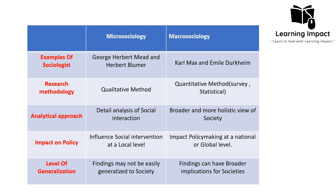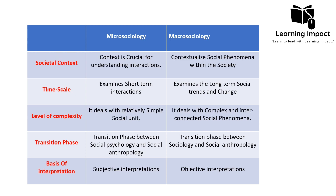Regarding level of generalization, findings obtained through micro sociology cannot be easily generalized to the whole society because they have been studied at the local level. For example, the way two friends interact cannot be generalized to overall interaction in society, as it occurs within a specific circumstance at a low level. In macro sociology, however, findings can have broader implications for society because the approach is more holistic and broader.